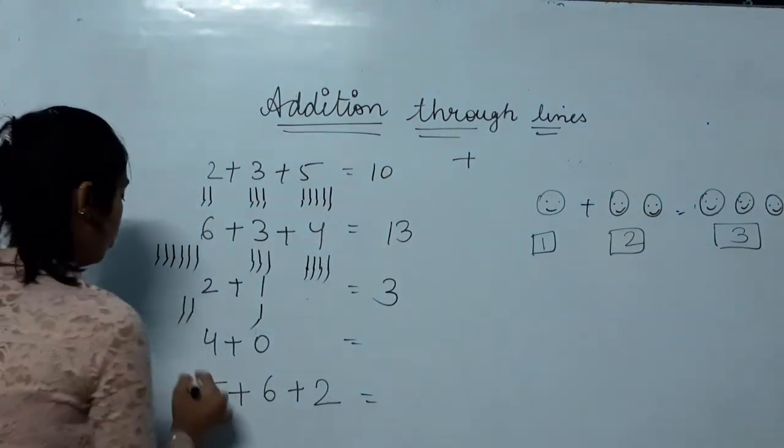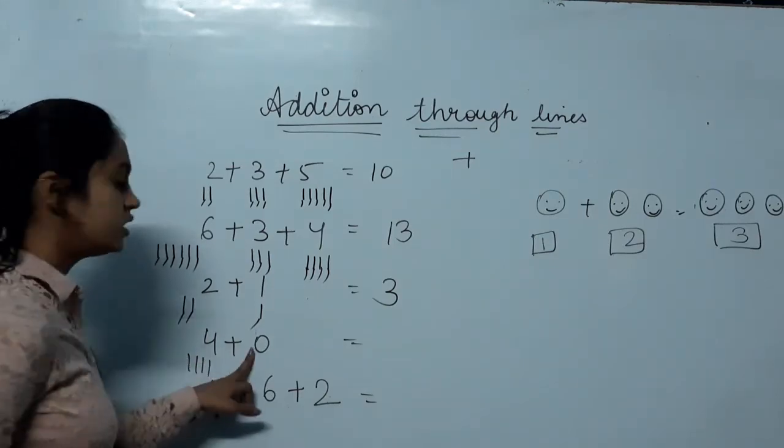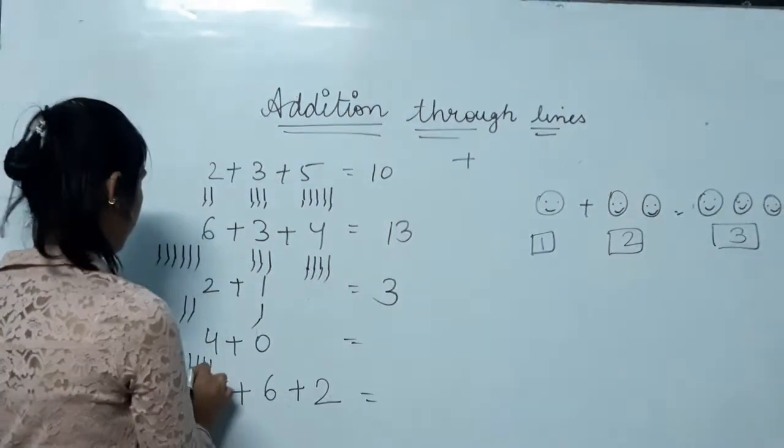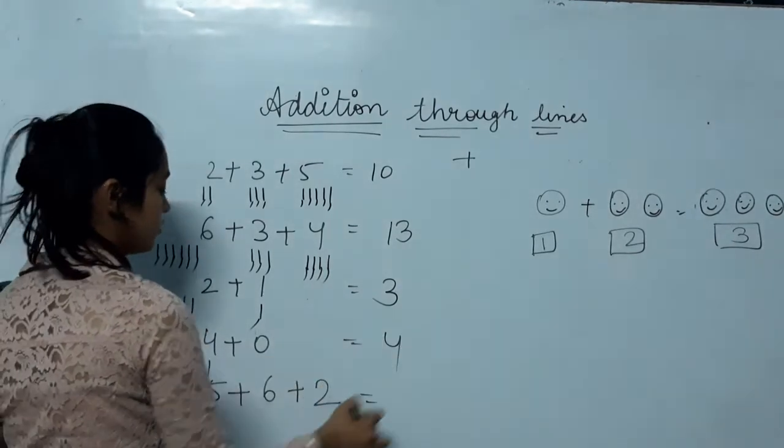Four plus zero. One, two, three, four. Zero has no value. Zero is nothing. So one, two, three, four. The answer will be four.